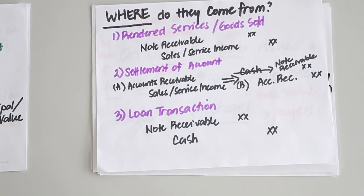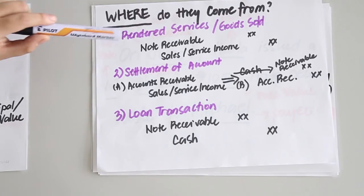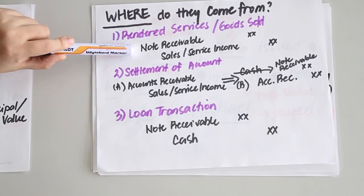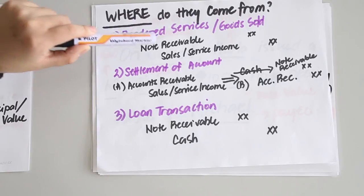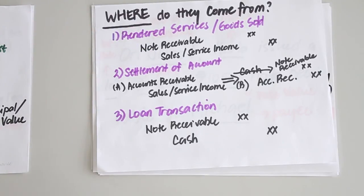Promissory notes can come from several sources. The first is from the rendering of services or sale of goods. A customer may not have enough cash on hand and may opt to issue a note receivable instead, paying at a later date. To journalize this transaction, you debit notes receivable and credit sales or service income.